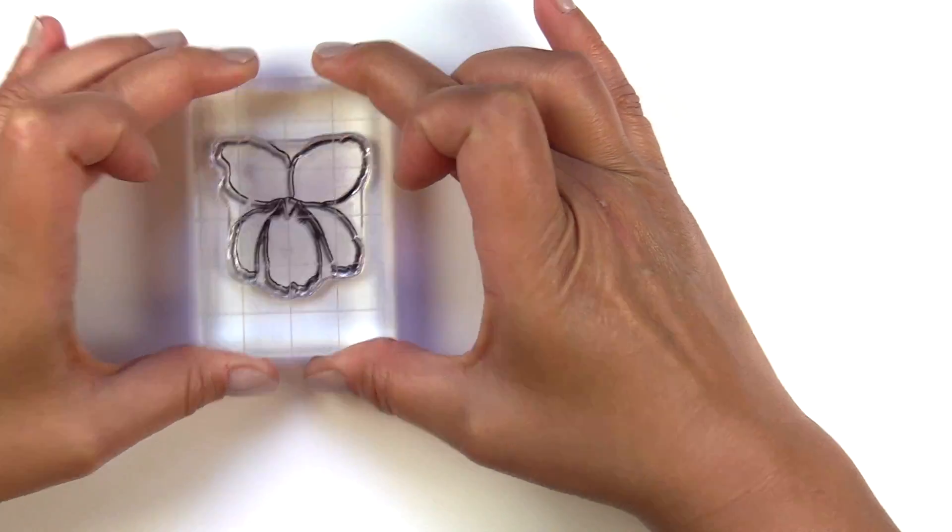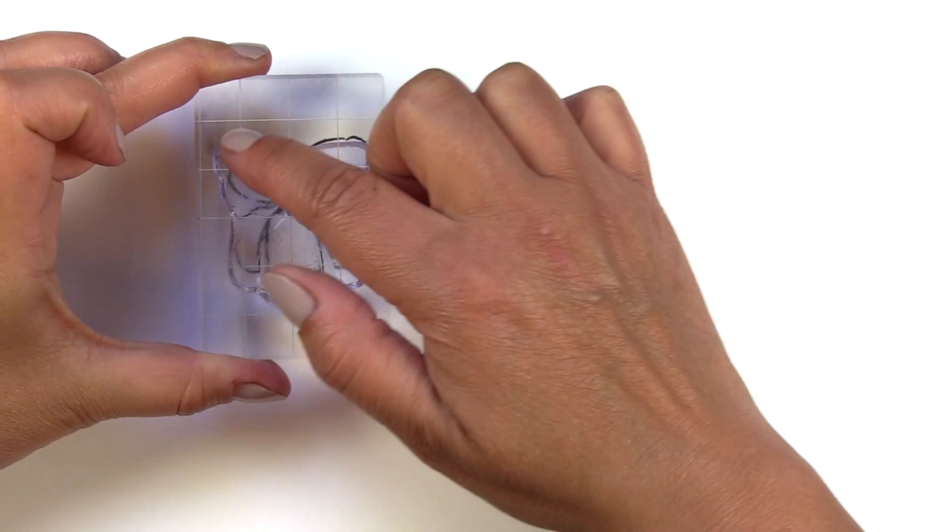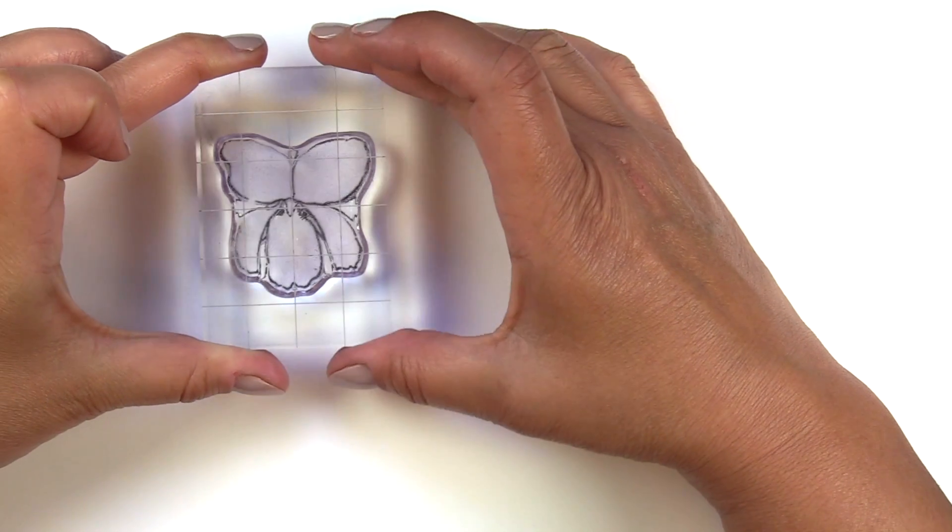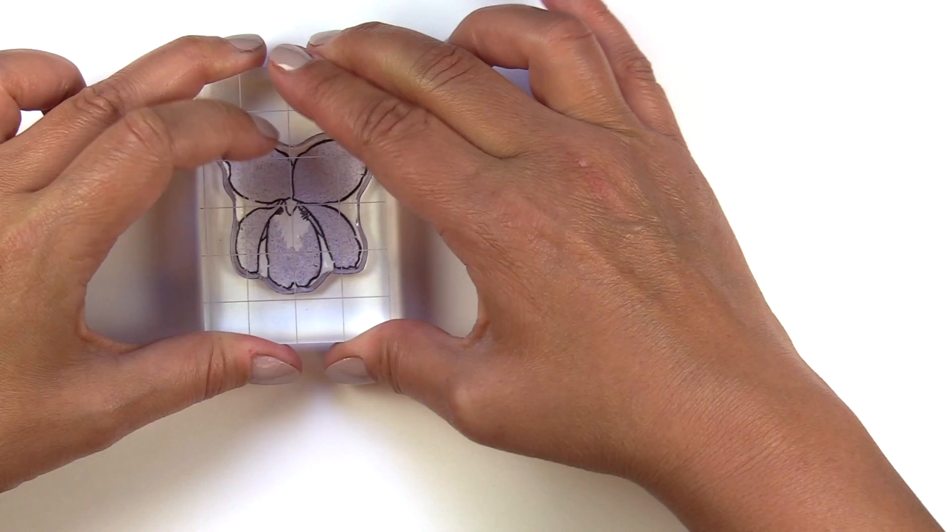I'll stamp the first layer of the largest bloom in permanent black ink and use Enchanted Garden Color Family for the rest. The first layer is very straightforward. Line up the outer edges and this is stamped in Wisteria, the lightest color.